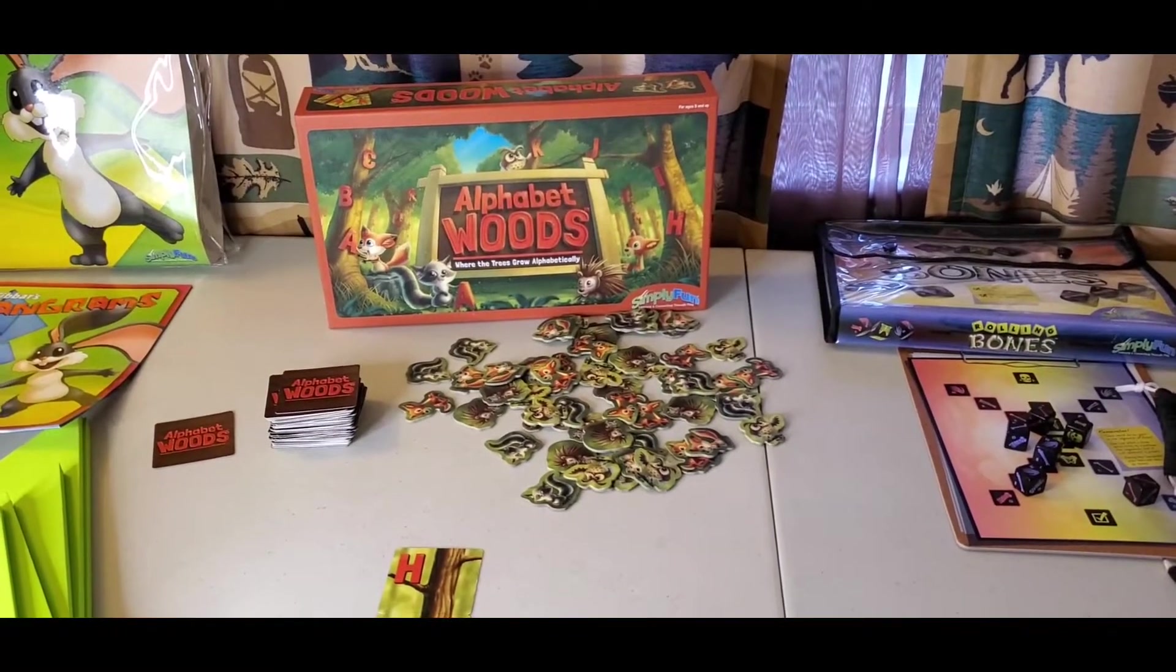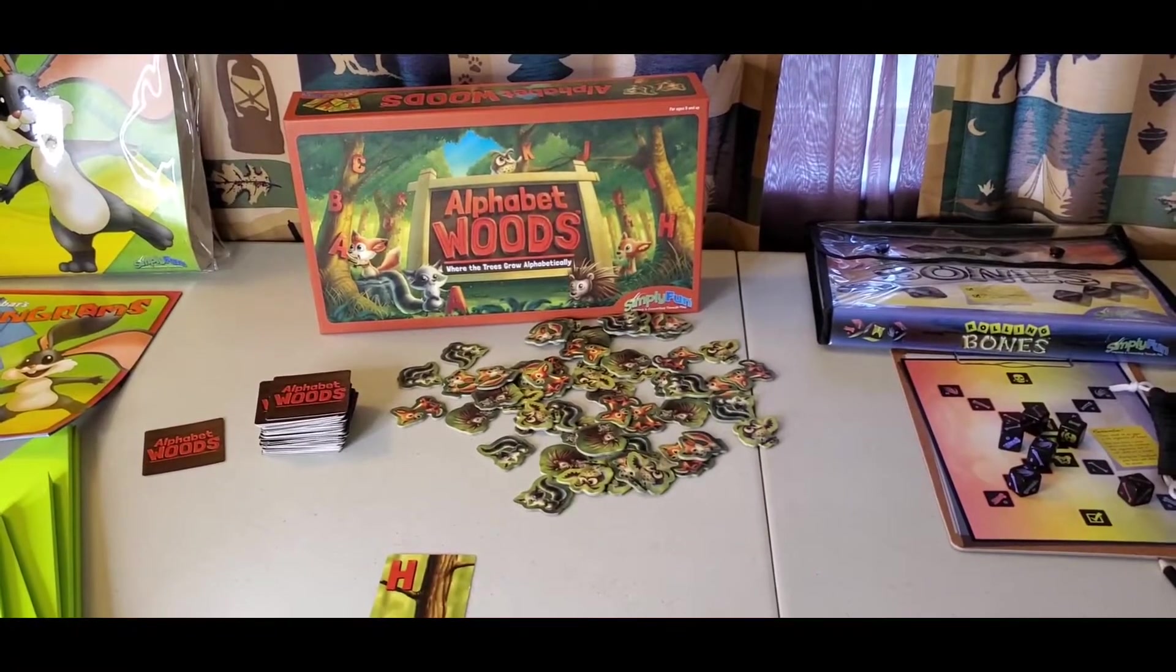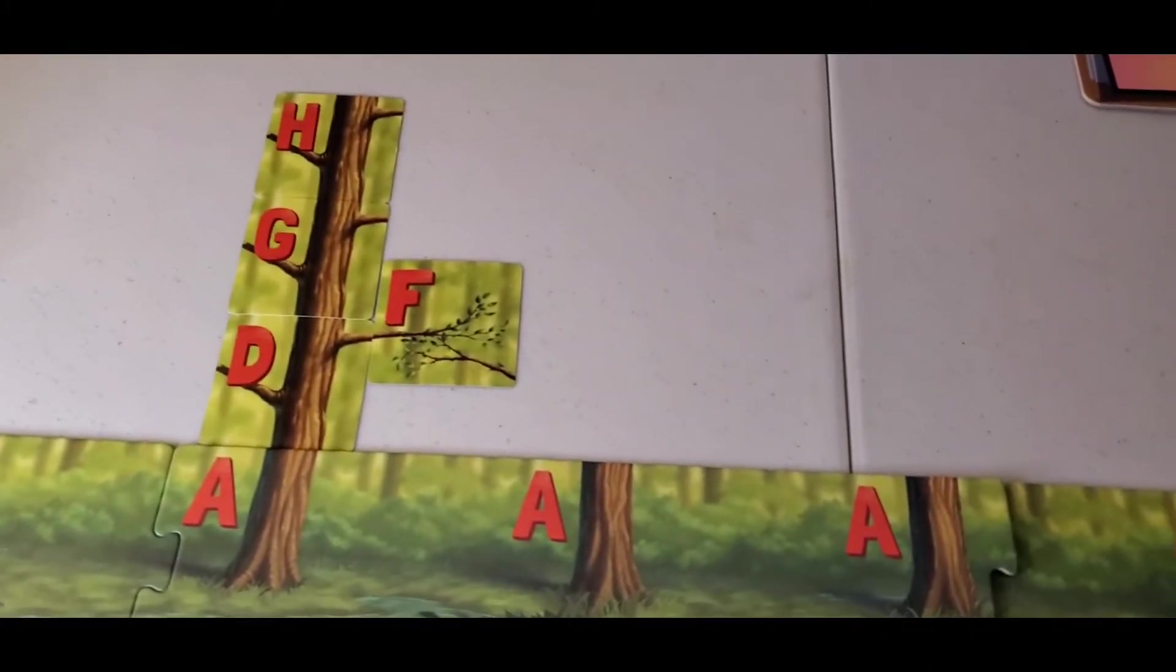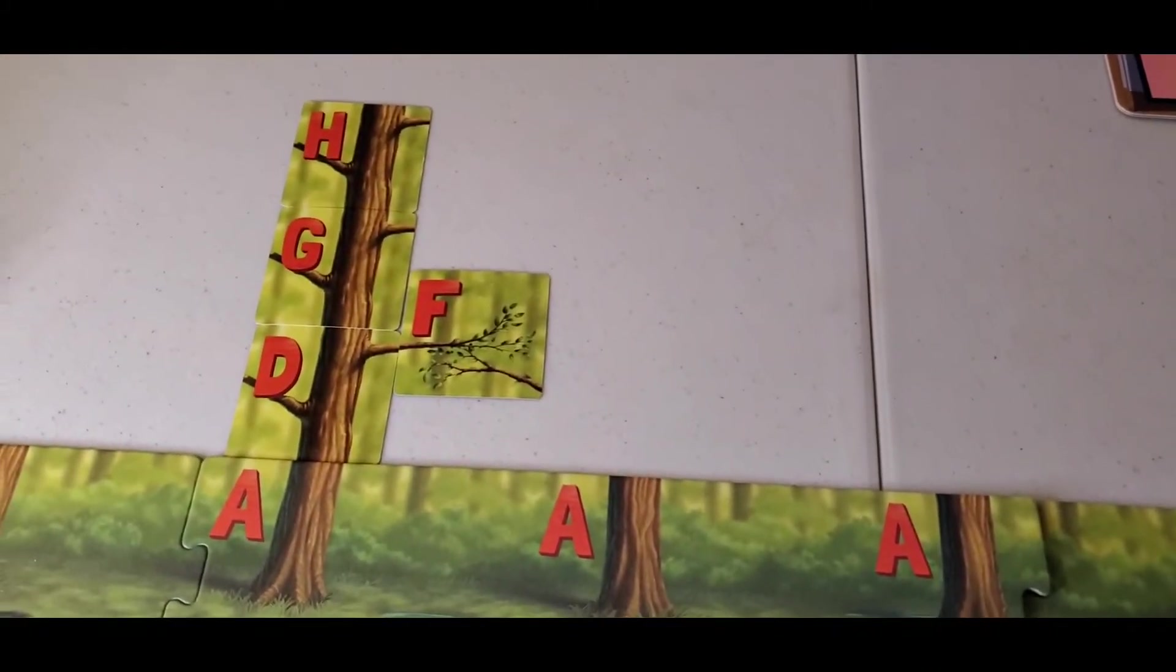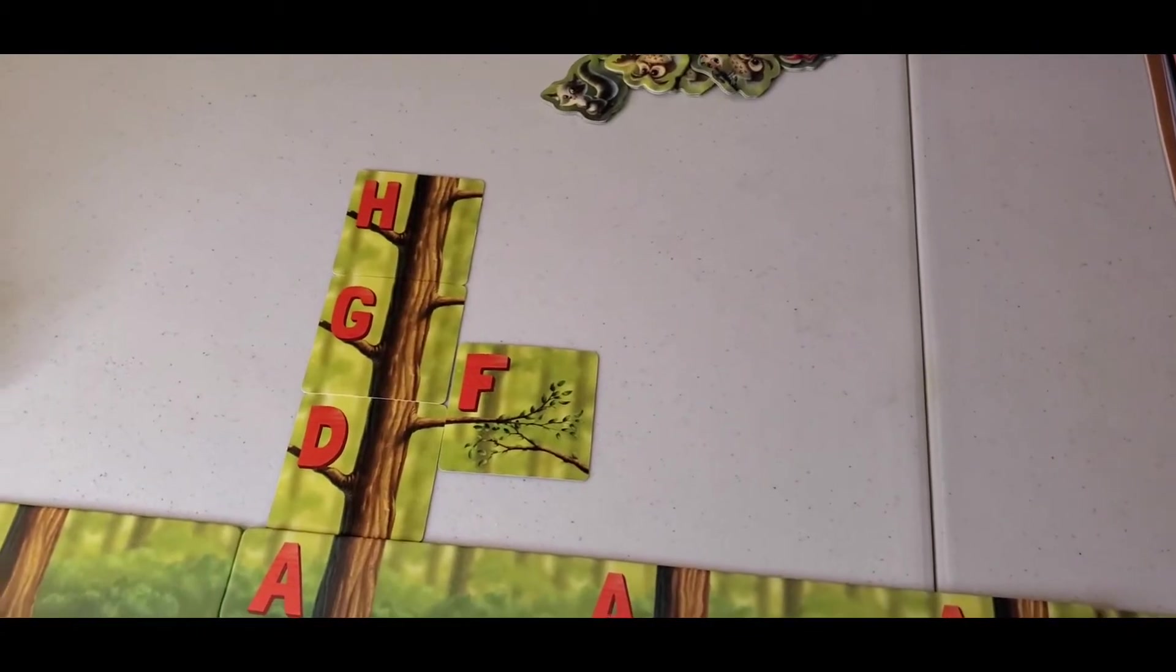Alphabet Woods is for ages five and above, two to five players, and it practices alphabetizing and sequencing. In this game, players are practicing their alphabetizing skills as they build trees, add branches, and collect animals.